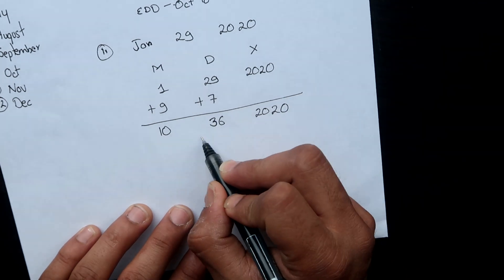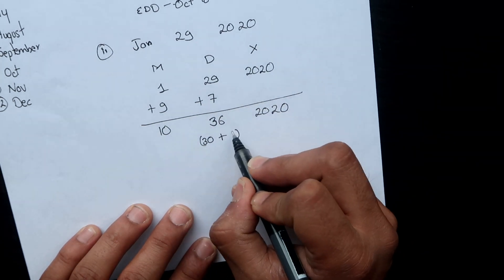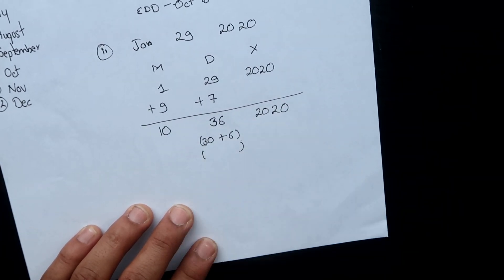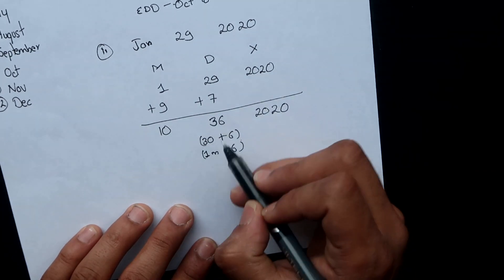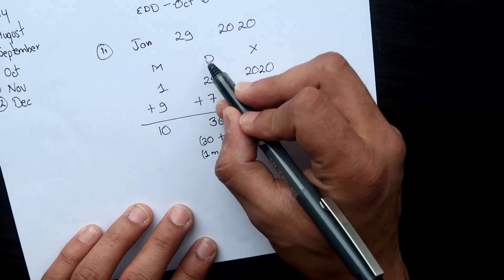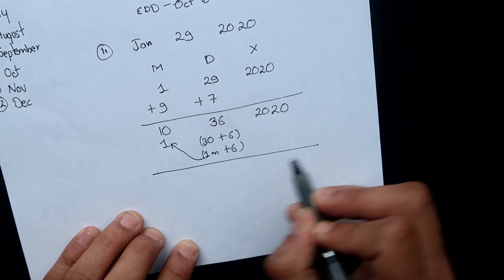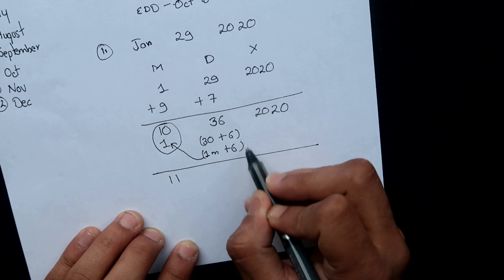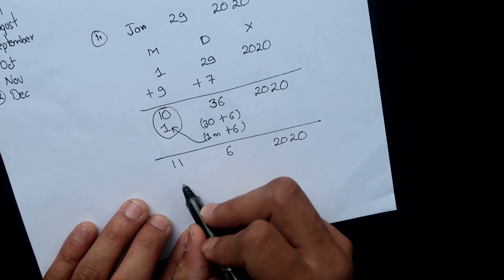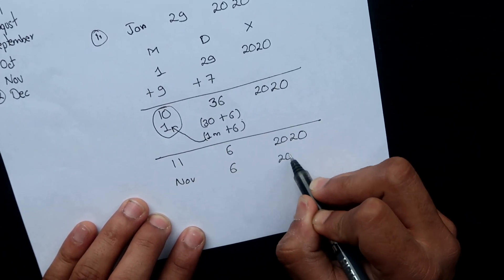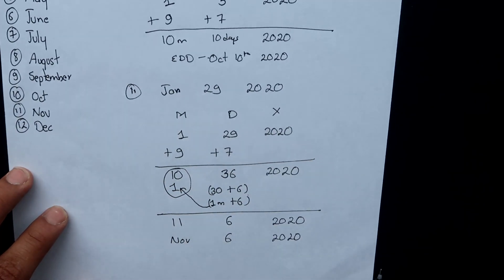In this case, break down the 36 days into 30 plus 6. Since 30 days means one month, we carry one month over to the month column. The day column now has just 6 remaining. So 10 + 1 = 11 months, 6 days remaining, and Year 2020. The estimated date of delivery is November 6, 2020.